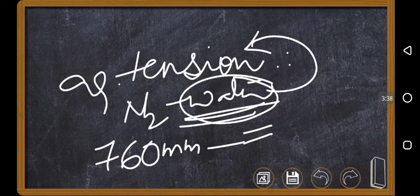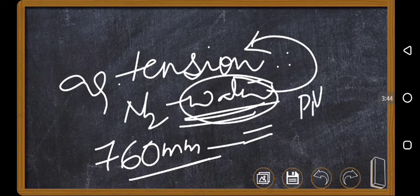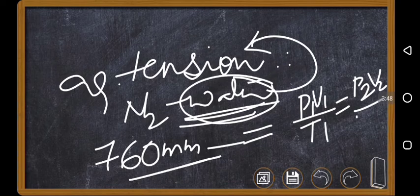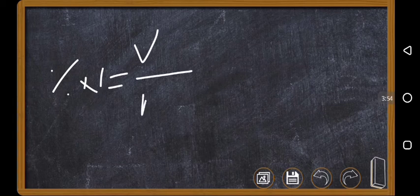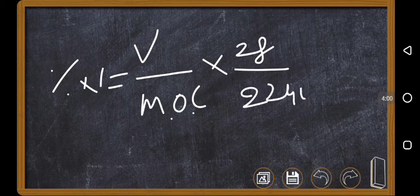So, aqua tension must be subtracted. Then you apply P1 V1 by T1 equals P2 V2 by T2, so that you are getting the volume. Once, if you get the volume, then percentage of nitrogen equals that volume of nitrogen divided by mass of organic compound times 28 by 22,400 times 100. You will get it. This is percentage of nitrogen.